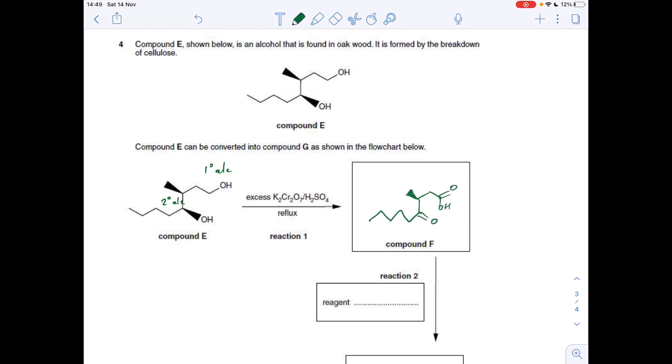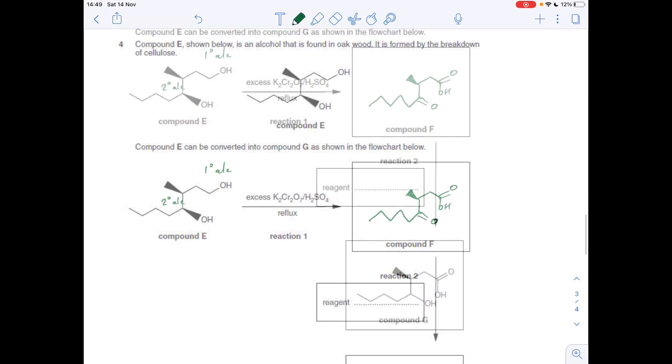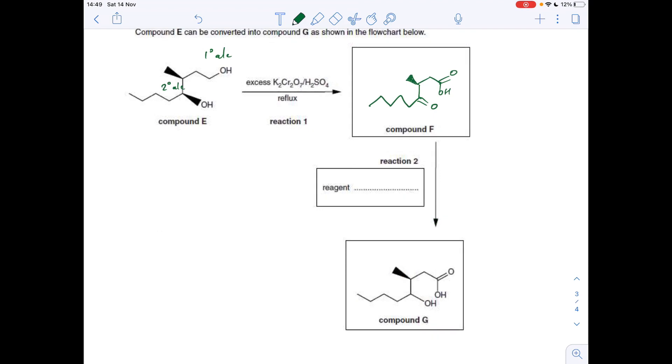So compound D is going to look like that. And the second reaction, you can see what's happened here, the carboxylic acid group hasn't changed, but the ketone group has changed back into the secondary alcohol. So it's obviously been reduced. The reducing agent's already featured on this set of questions: NABH4.